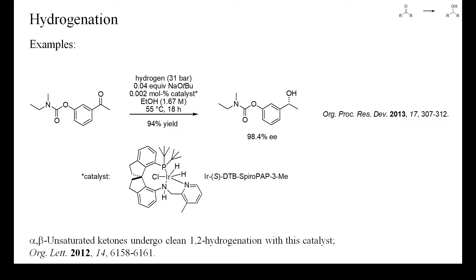This is a further example of enantioselective hydrogenation of an aromatic ketone. Iridium and the required ligand are very expensive, but by increasing the reaction temperature slightly, a complete conversion of the starting ketone could be achieved in 18 hours with only 0.002% of catalyst.